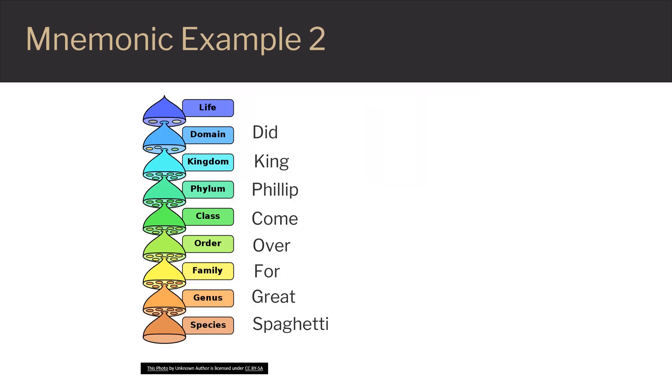To remember the order of the scientific classification of taxonomy, did King Philip come over for great spaghetti, is domain, kingdom, phylum, class, order, family, genus, and species.